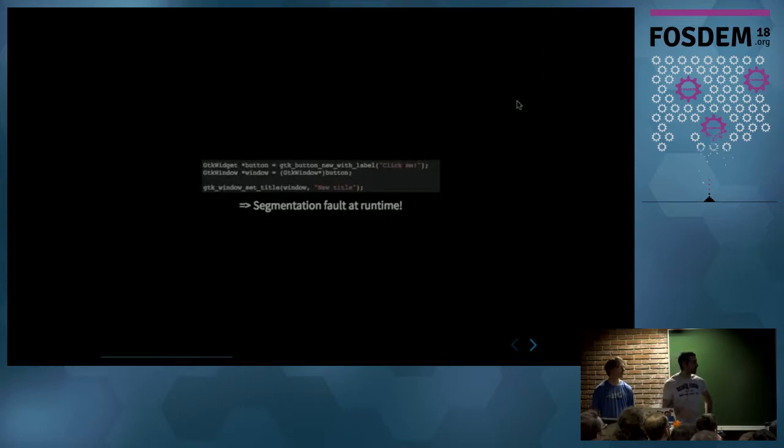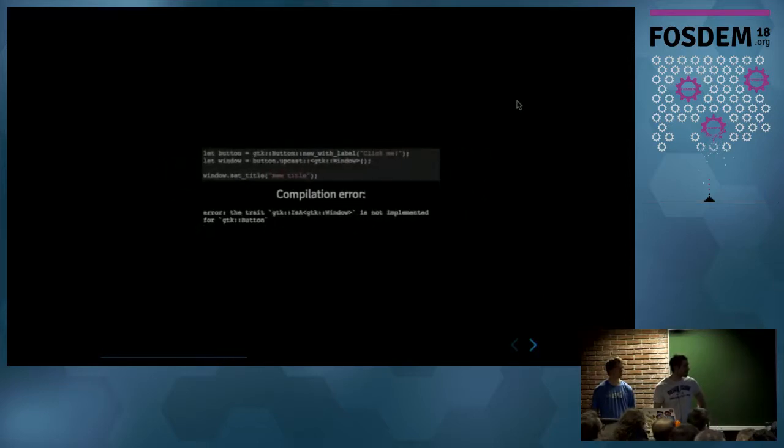So here, if you try to make an invalid cast, it will just segfault when you run it. So it's inconvenient to discover there is an error in your code after being compiled when distributed. And in Rust, if you try the same, casting a type which isn't the children of a window. For example, a button is the children of a widget but isn't the children of a window. If you try it, you won't compile. You will get an error. So the trait isn't implemented for a GTK button.